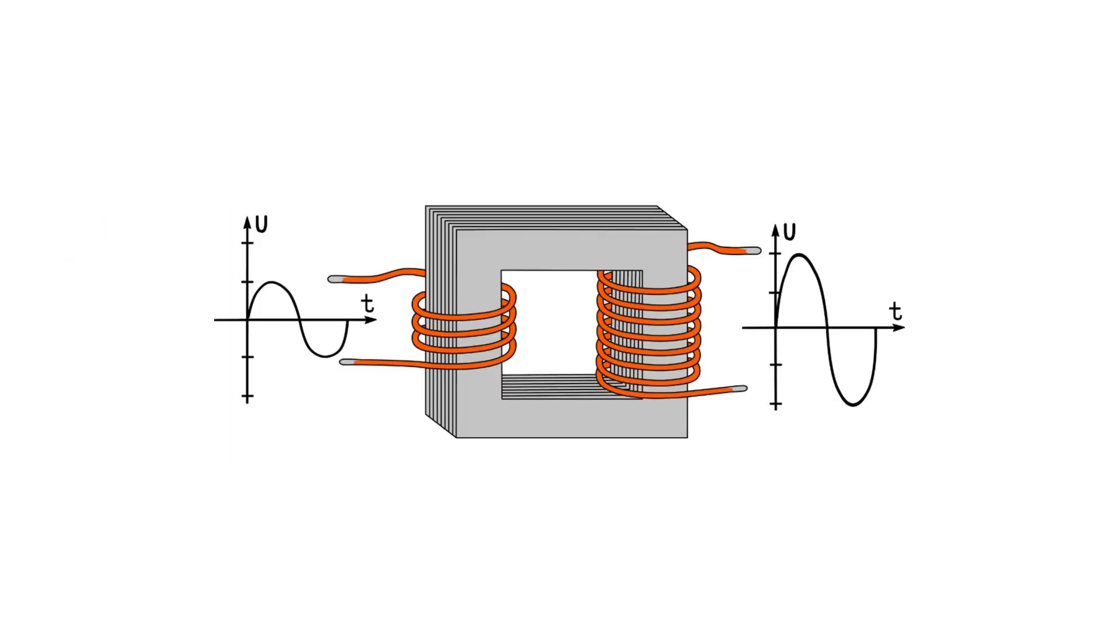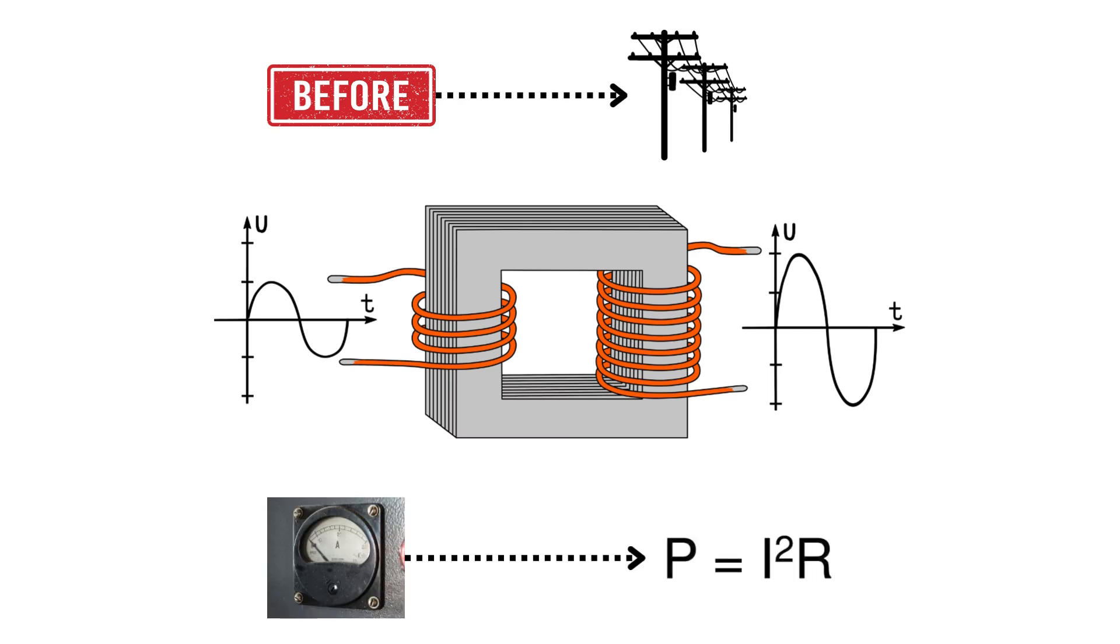By stepping up AC voltages to high values before transmitting the power, you are able to transmit it at a very low current, meaning that little power is lost due to the internal resistances of the power lines.